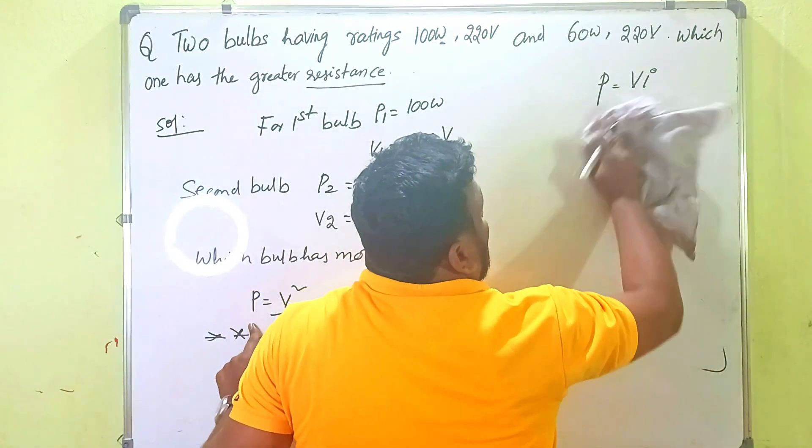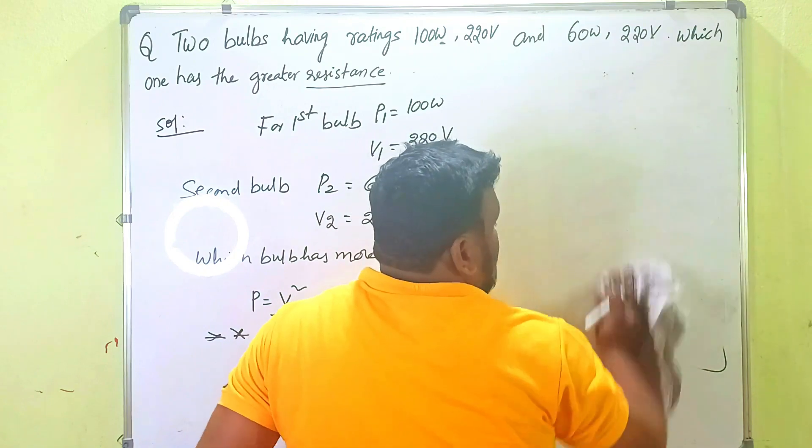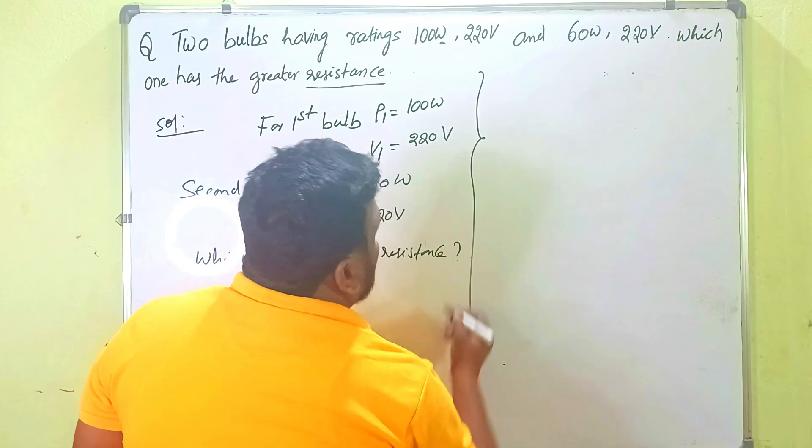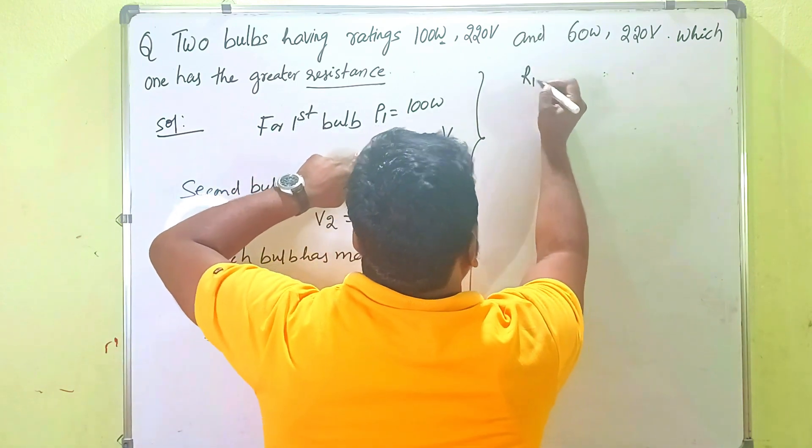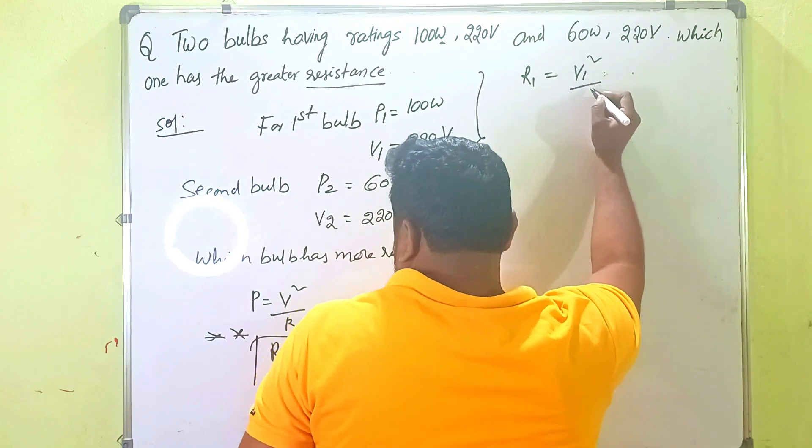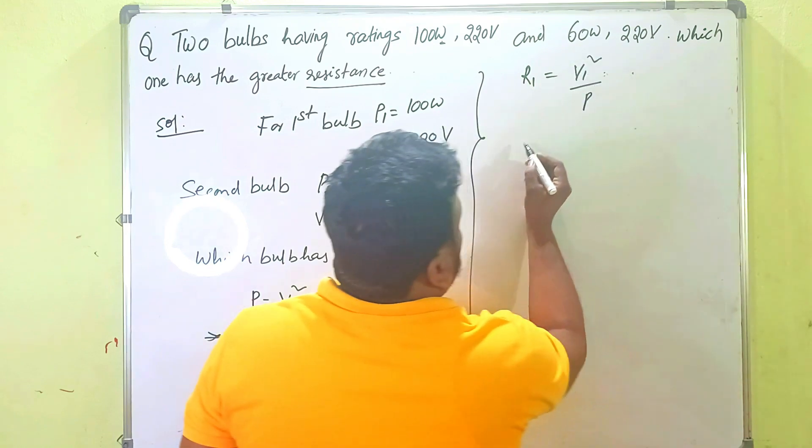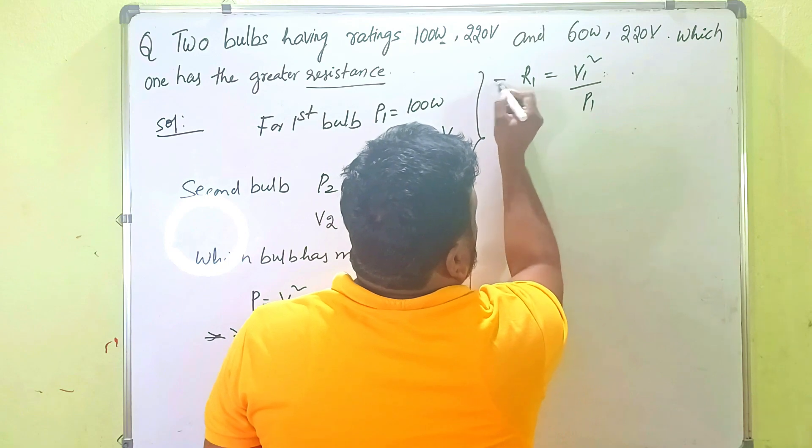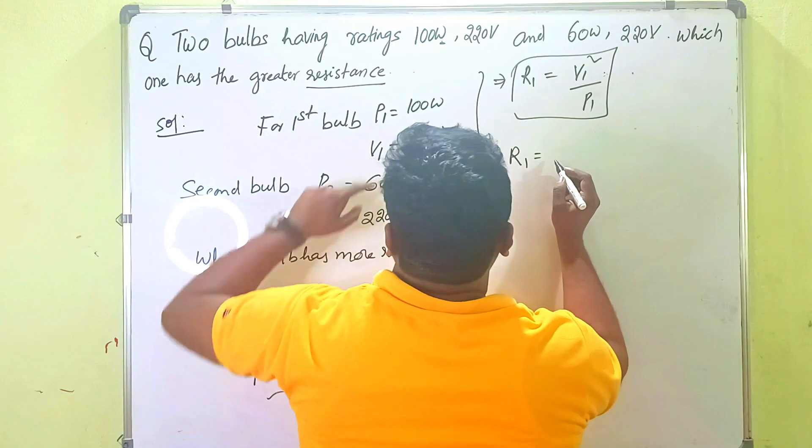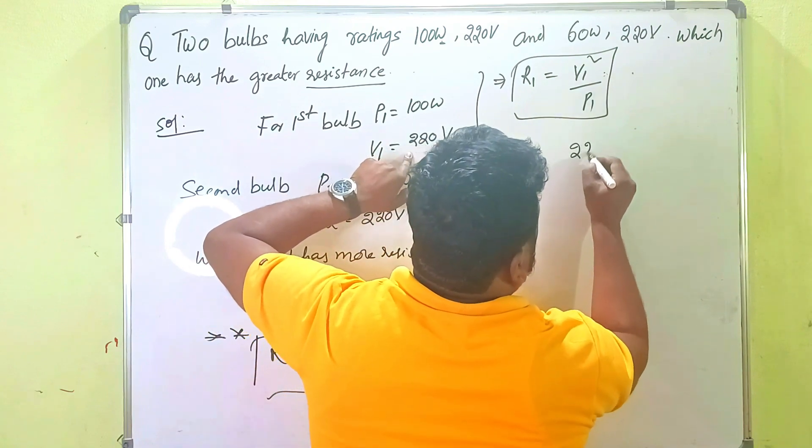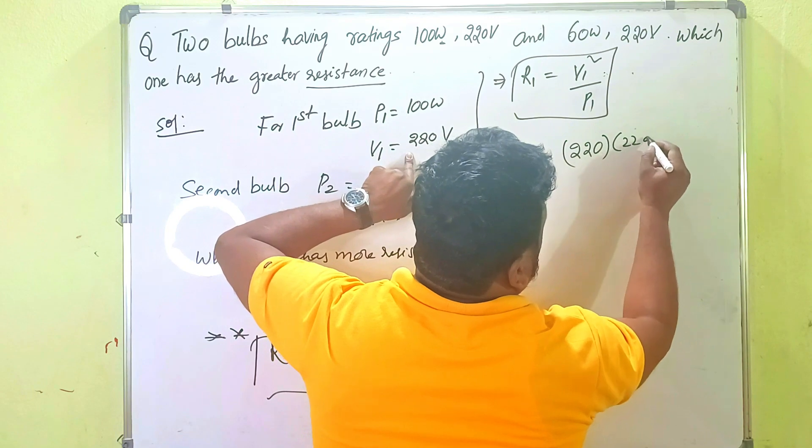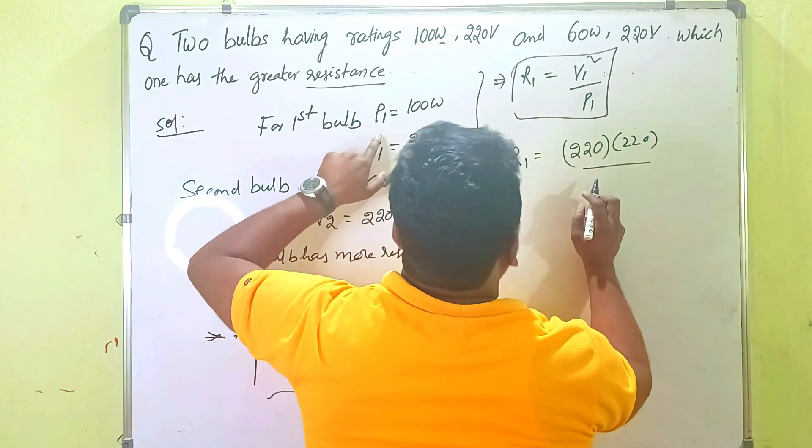Then here now simply R is equal to V square by P. In that formula we have to substitute the values of power and potential for the two bulbs. So again first of all what is like? R1 is equal to what? V1 square by P1. So R1 is what? V1 square by P1. What is R1 here? V1 is 220. 220 into 220, whole square means what? 220 into 220 by P1. What is P1? 100.